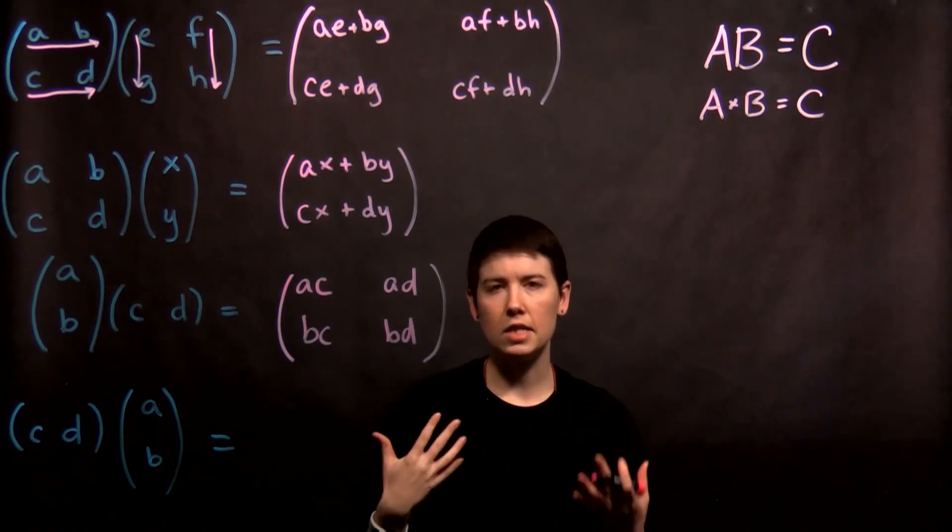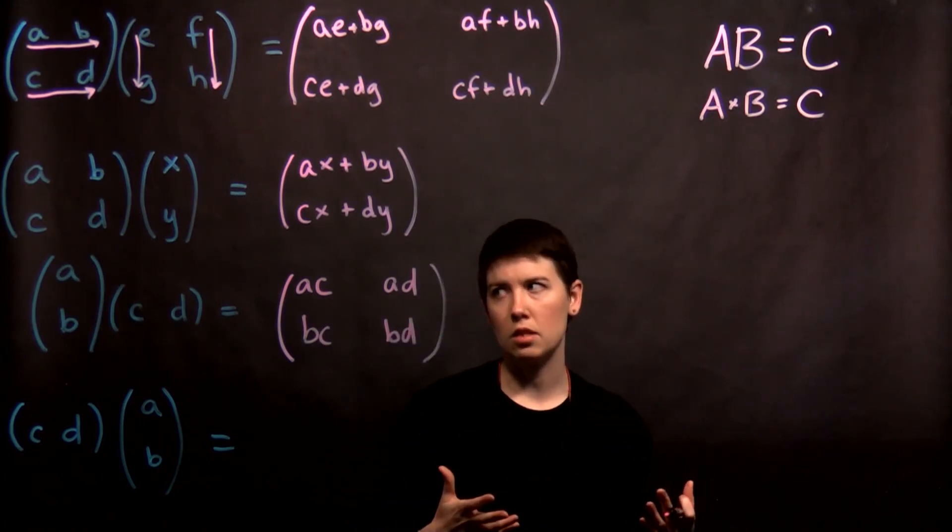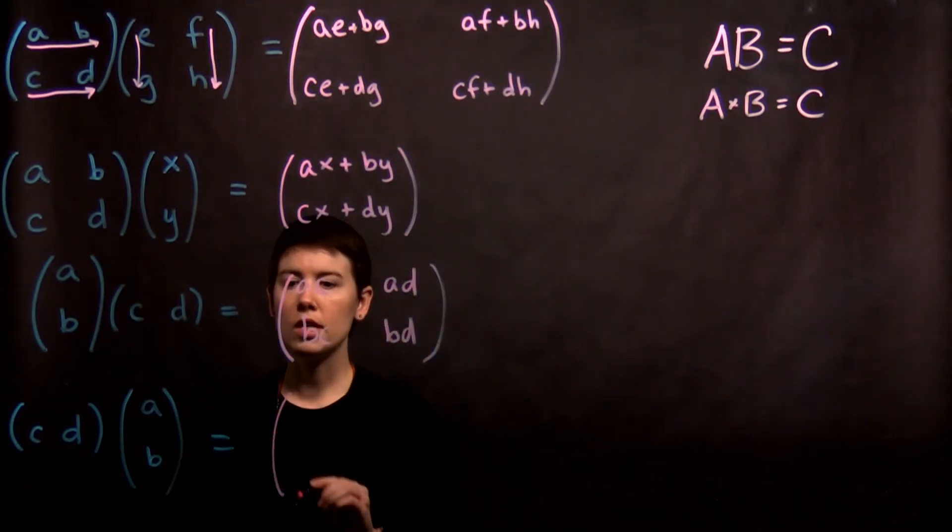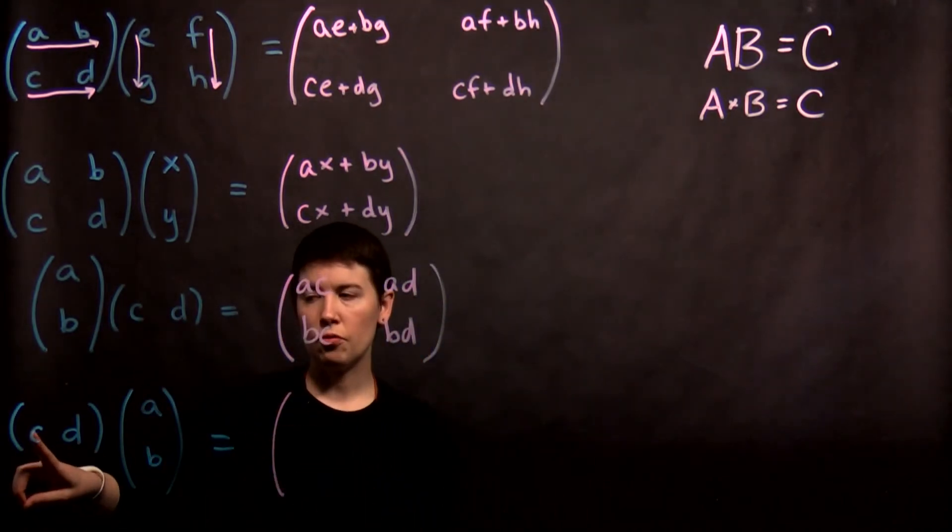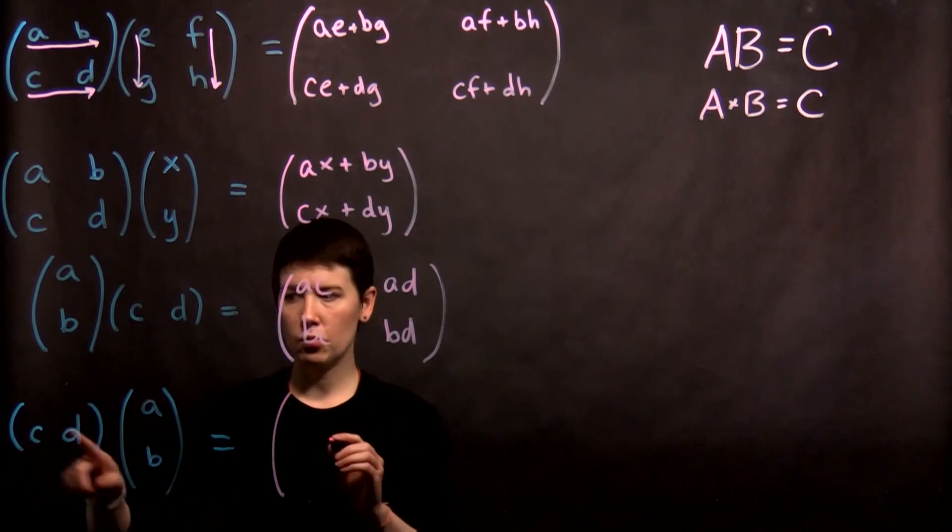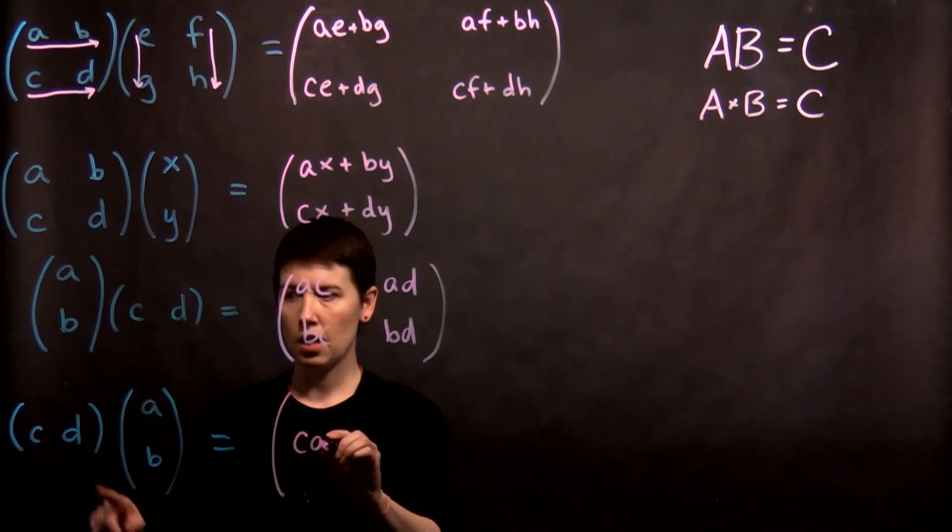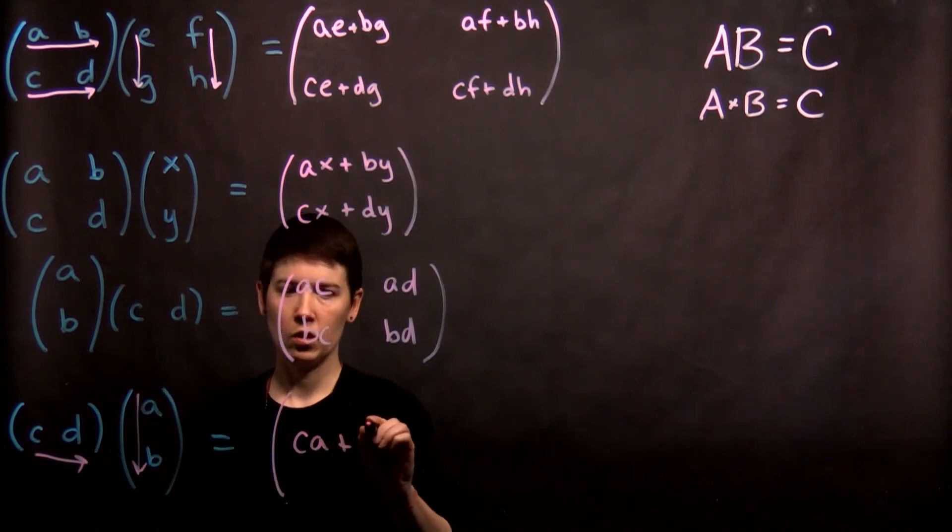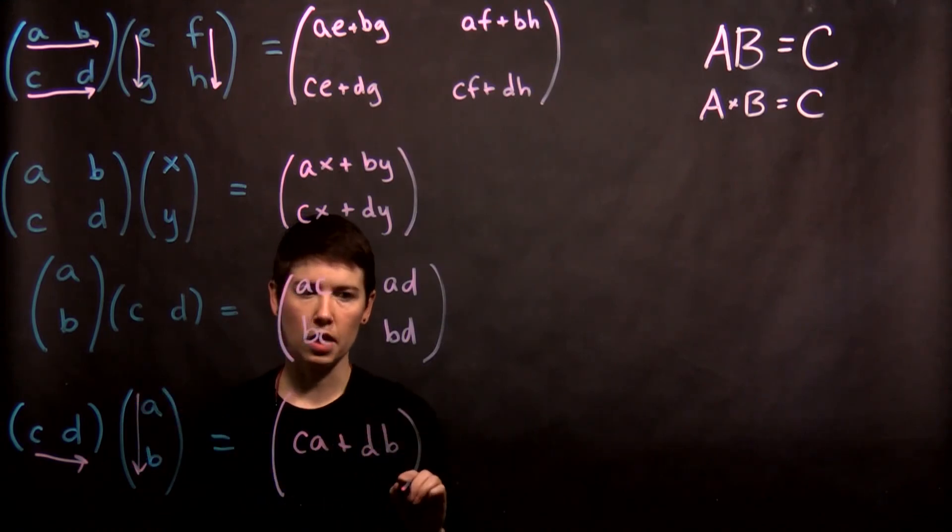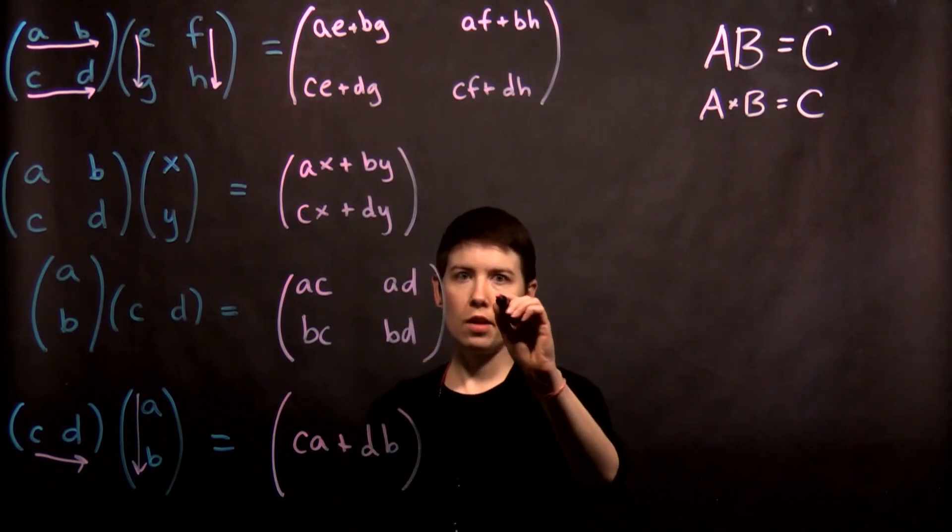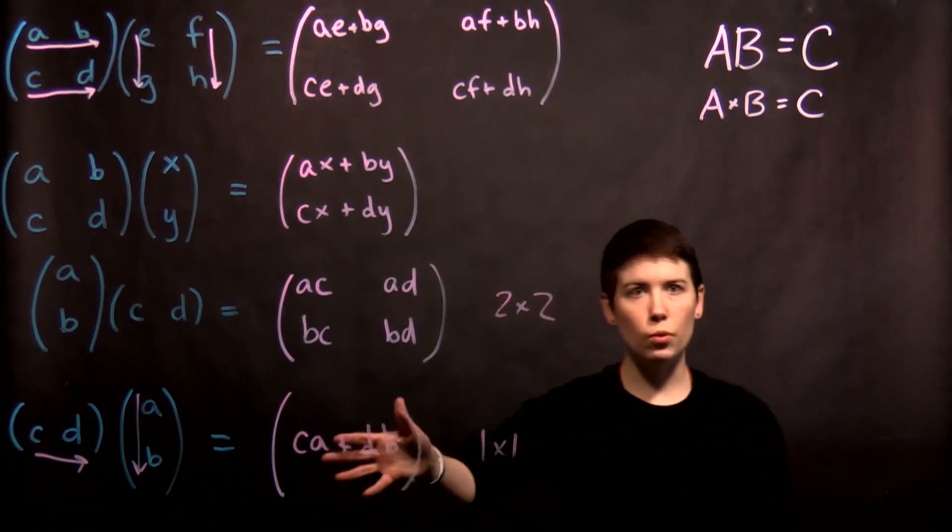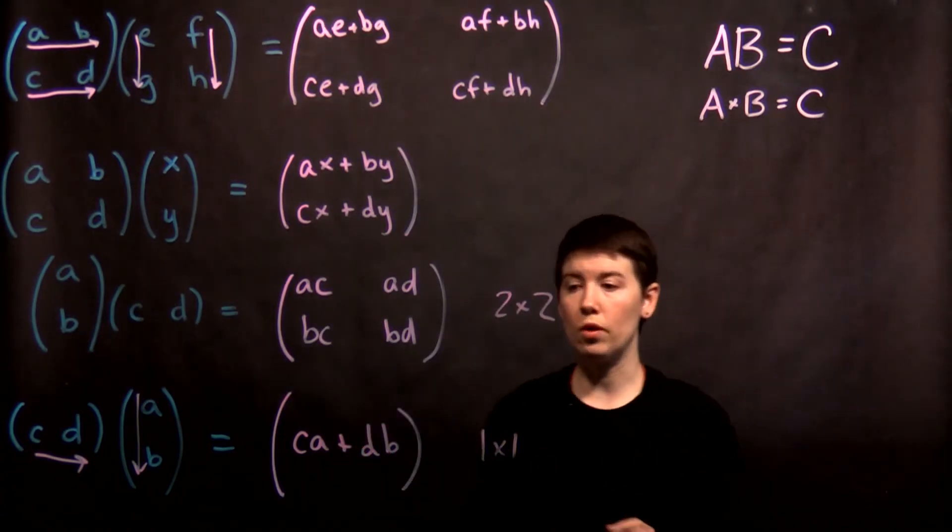So this gets into that idea that certain things can be multiplied together and certain things cannot. But now let's flip the order and we get a different type of entry. So first it goes row times column. So notice this is just CA plus DB, and we're done. So this was a two by two and this is actually a one by one. So we would call this a scalar. This is just one value.